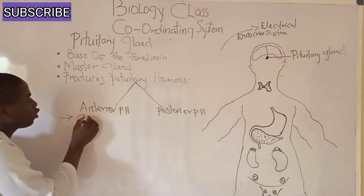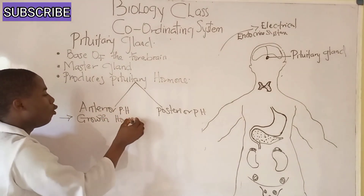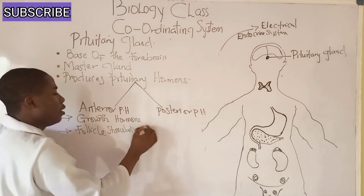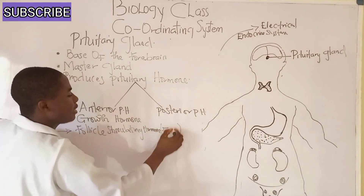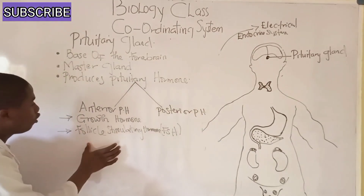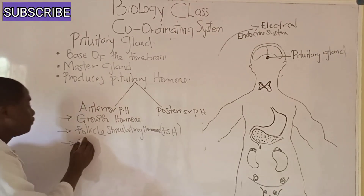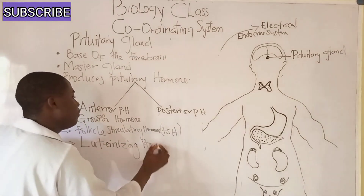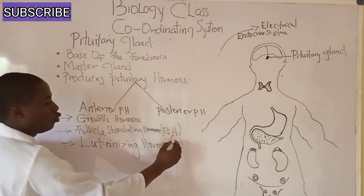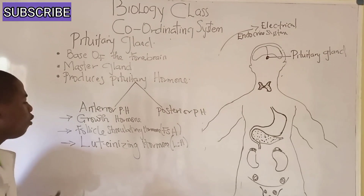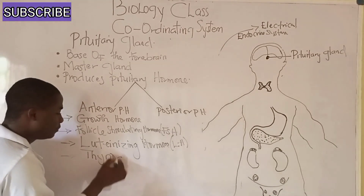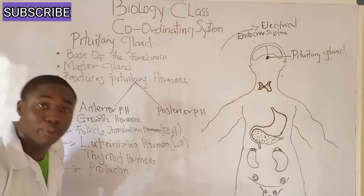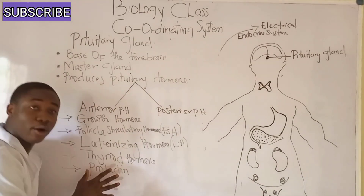Under the anterior pituitary hormones, we have the growth hormone, the follicle-stimulating hormone (FSH), the luteinizing hormone (LH), the thyroid hormone, and prolactin. These are the hormones under the anterior pituitary hormones.